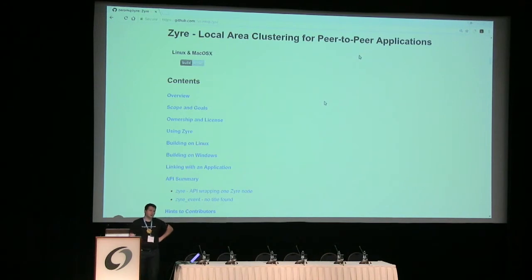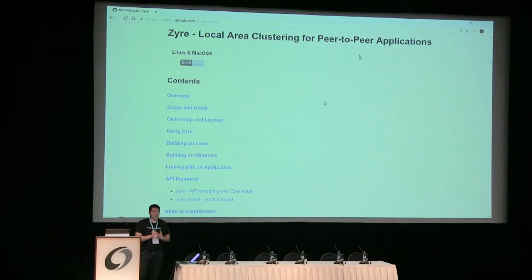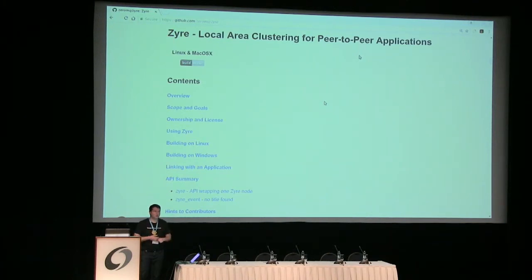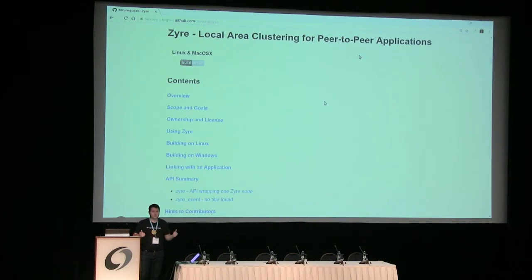Zyre is built on three libraries: libZMQ, libCZMQ, and it is itself a library. You can't just use it as-is — you have to write your own C program to use that library to benefit from Zyre. As an end-user I wanted a final end-user application I could try, so we made this demo I'm going to show you, with multiple OpenWRT routers running with it.